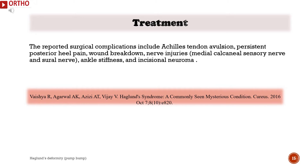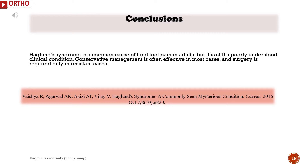The reported surgical complications include Achilles tendon avulsion, persistent posterior heel pain, wound breakdown, nerve injuries (medial calcaneal sensory nerve and sural nerve), ankle stiffness, and incisional neuroma. Haglund's Syndrome is a common cause of hind foot pain in adults, but it is still a poorly understood clinical condition. Conservative management is often effective in most cases, and surgery is required only in resistant cases.